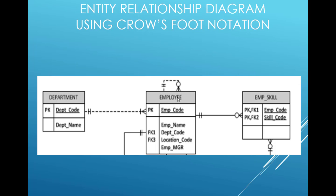With our employee entity, for example, we have a primary key of employee code, which is also a primary key for our department entity — that's the relationship between the two. We have other attributes in our employee table such as employee name, department code, location code, and employee manager. There are other entities that go along with this as well, but you can see all the key characteristics listed here, giving us the start of an entity relationship diagram using crow's foot notation.